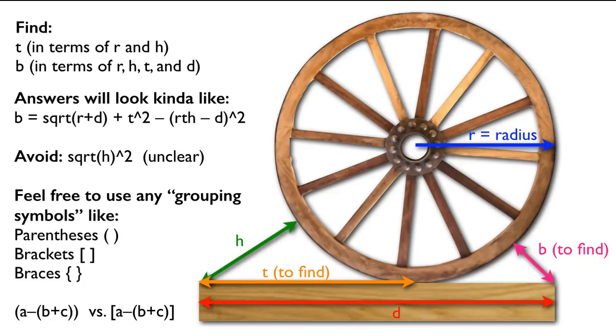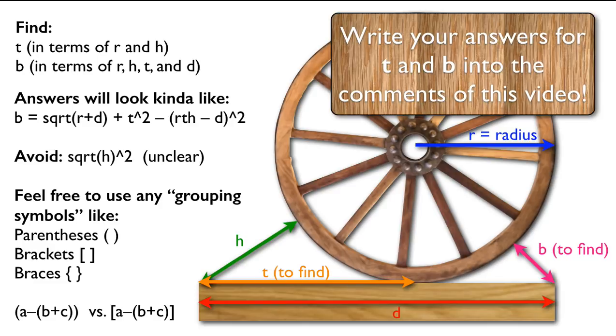So if you have A minus the quantity B plus C, you can use it with nested parentheses. There's nothing wrong with that. But if you use different types of grouping symbols like brackets and then parentheses, it just makes it easier to read. And your final answer is just going to be written into the comments for this video. This is just an informal algebra exercise.